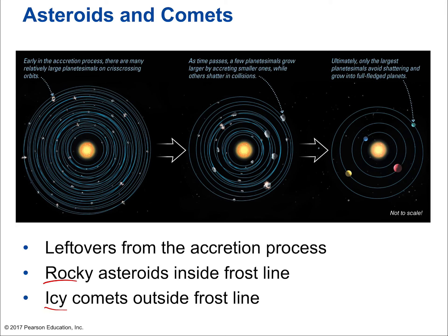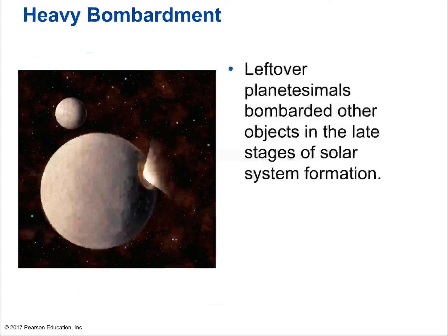There used to be many more asteroids and comets. Once the planets were fully formed, they were bombarded by tons of leftover asteroids and comets — we see evidence of this when we look at planetary surfaces that haven't changed much since those early ages, covered in huge craters. We don't see that on Earth because Earth has constantly refreshed its surface through plate tectonics.